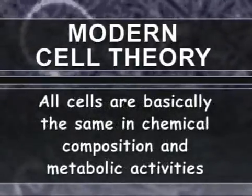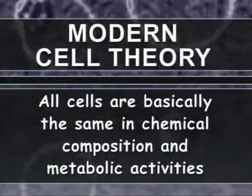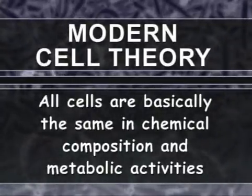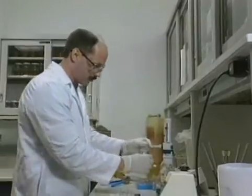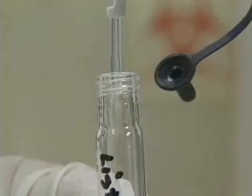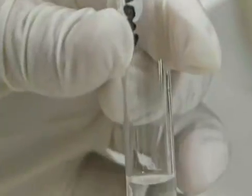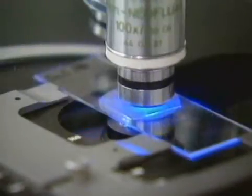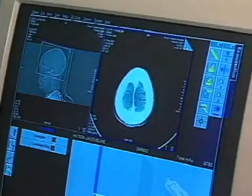Modern cell theory now states that all organisms are made up of cells, that new cells are always produced from pre-existing cells, that the cell is a structural and functional unit of all living things, that the cell contains hereditary information passed on during cell division, and that all cells are basically the same in chemical composition and metabolic activities. Cell biologists still cannot describe all the details of how cells produce life, but recent research in genetics, developmental cell biology, immunology, and neurobiology have led to great strides in understanding the structures, functions, and evolution of the cell.